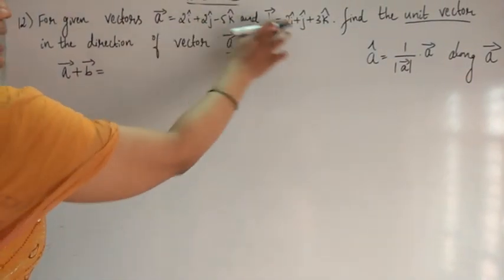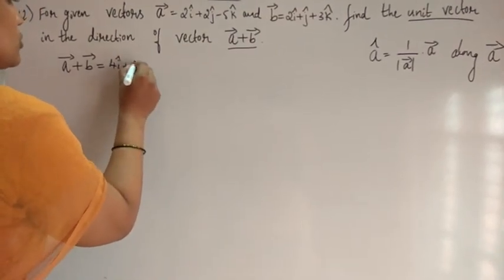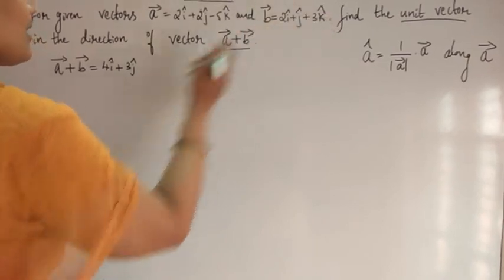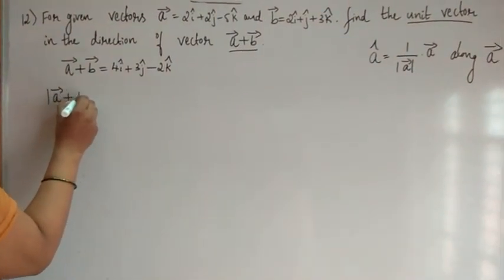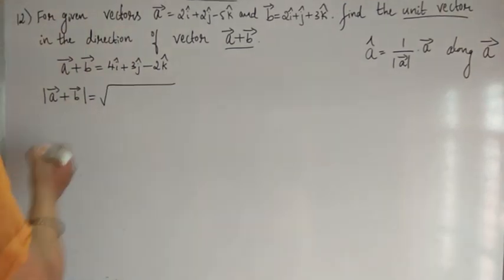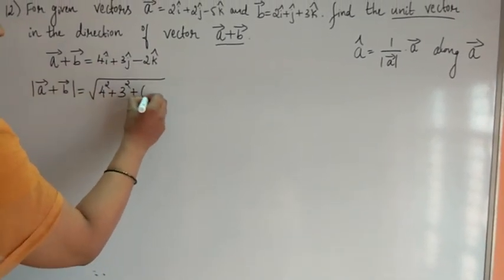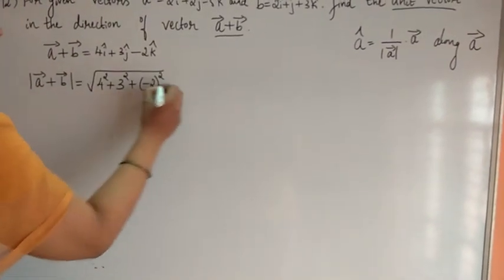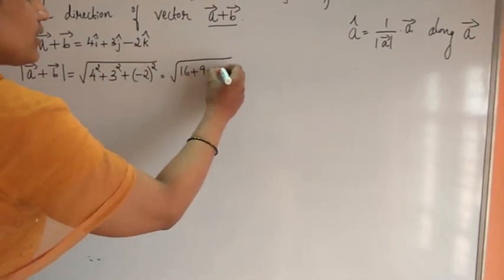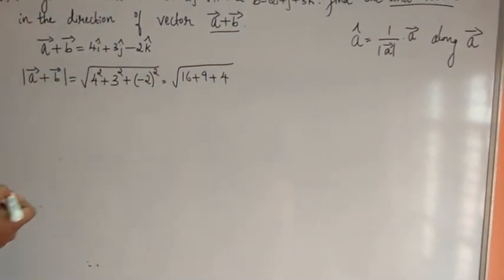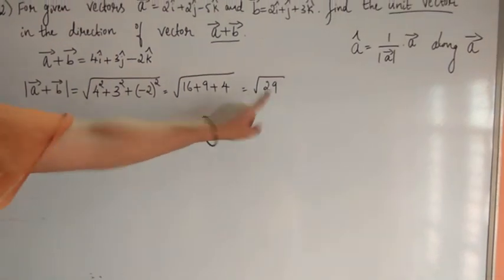Then find the magnitude of (A plus B): square root of 4-square plus 3-square plus (minus 2)-square, that is root of 16 plus 9 plus 4, equals root 29. Therefore the unit vector along the direction of vector A plus vector B is 1 by root 29, into (4i-cap plus 3j-cap minus 2k-cap). This is the required unit vector.